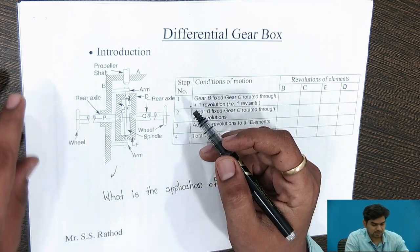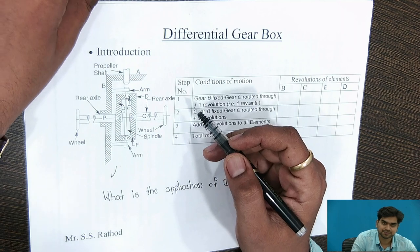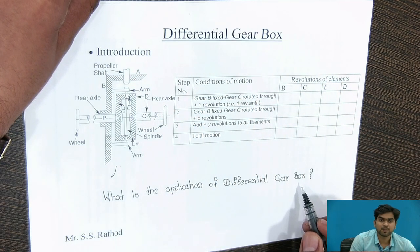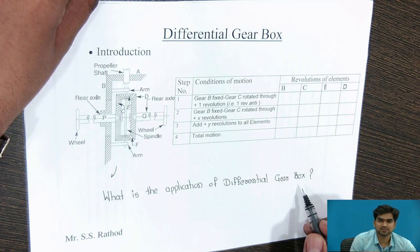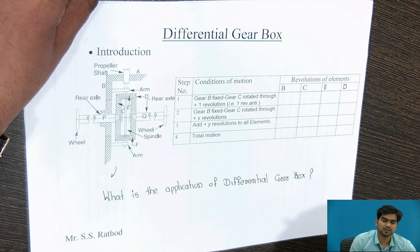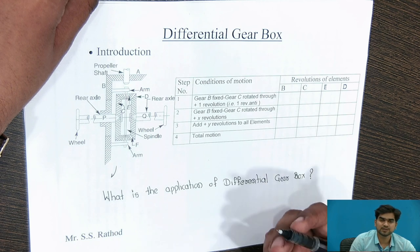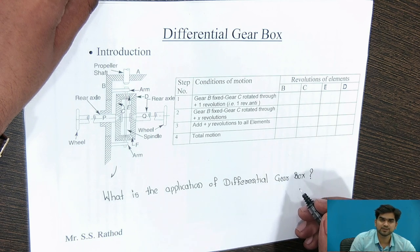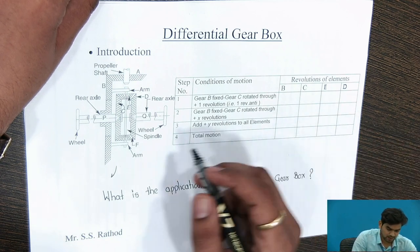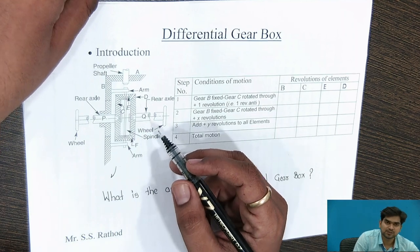The construction of this Differential Gearbox — but first, the application: in automobiles, the Differential Gearbox is used because when taking a turn, the outer wheel travels a greater radius or distance than the inner wheel. At that time, we require a speed variation between the two wheels — the inner wheel and the outer wheel — and that can be achieved using the Differential Gearbox. So we will see the construction of this Differential Gearbox.